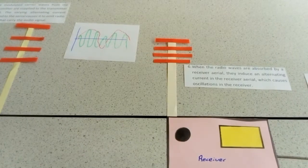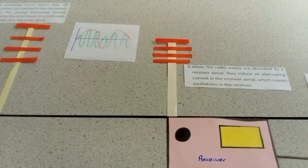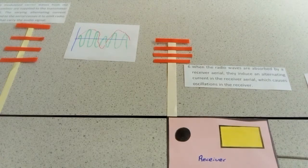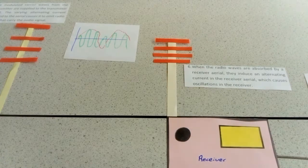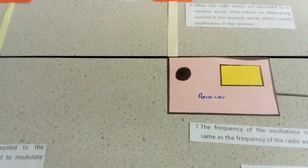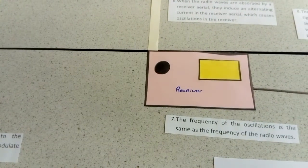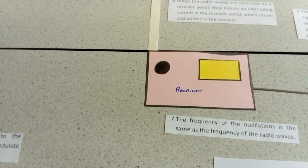When the radio waves are absorbed by the receiver aerial, they induce an alternating current in that aerial which causes oscillations in the receiver. The frequency of the oscillations is the same as the frequency of the radio wave.